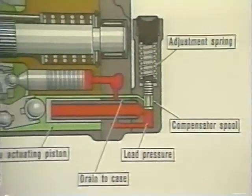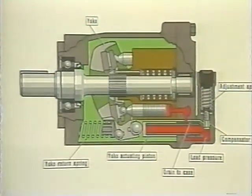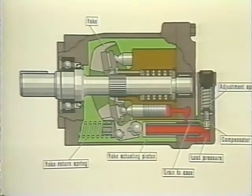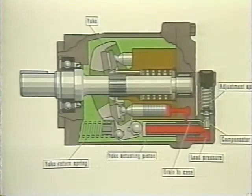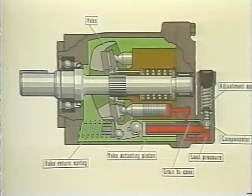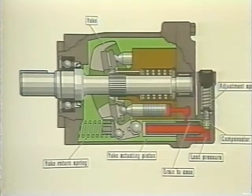A compensator is a device which permits full pump delivery up to a preset maximum pressure. When this setting has been reached, a small spool valve shifts and directs fluid into a piston which destrokes the pump, reducing its output to only what is required to maintain pressure. When outlet pressure drops due to changes in the workload, a spring returns the yoke to its full stroke position. By reducing pump flow instead of dumping it over a relief valve, heat losses are held to a minimum, with a commensurate saving in energy.